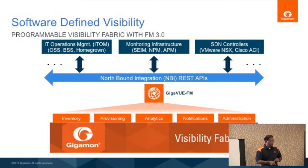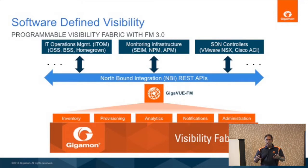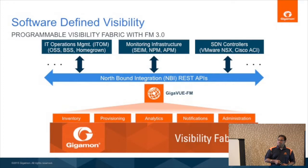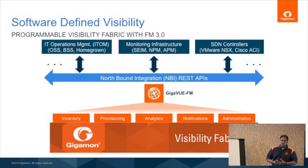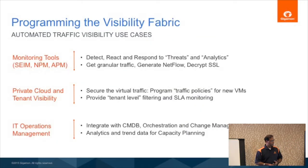All of this is managed by Fabric Manager, so we expose those as REST APIs for several use cases. IT operations management — a homegrown tool or OSS/BSS tool could consume these APIs, plug into dashboards, and look at the health of the visibility fabric, not just the production network. Then there's the closed-loop integration where a monitoring appliance like JDSU's can program the visibility fabric. And finally, SDN controllers — when a new virtual tenant or VXLAN network is created via VMware NSX or ACI, you can use traffic policies and GigaSmart functions to create the corresponding flow map.